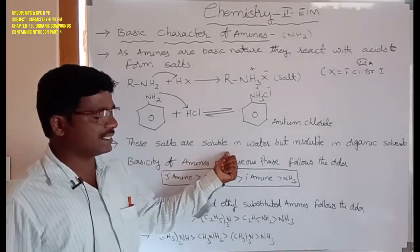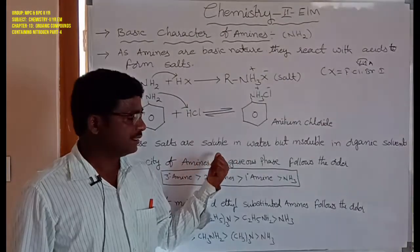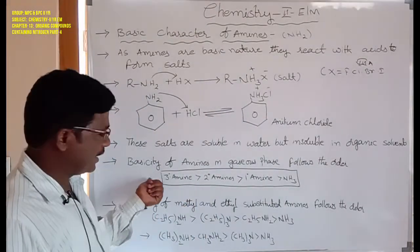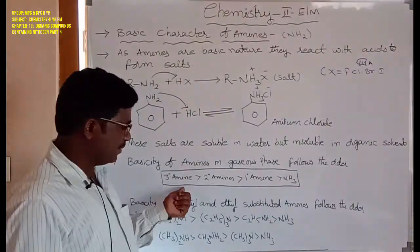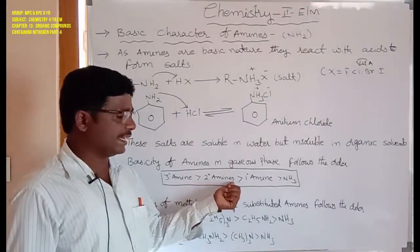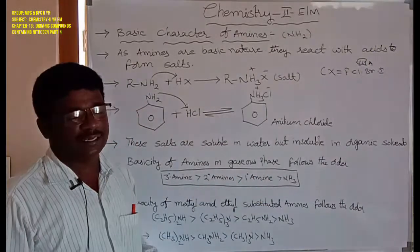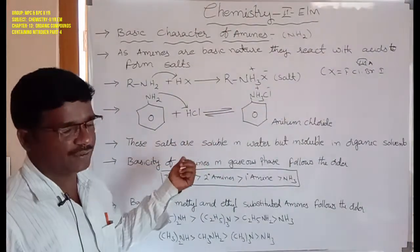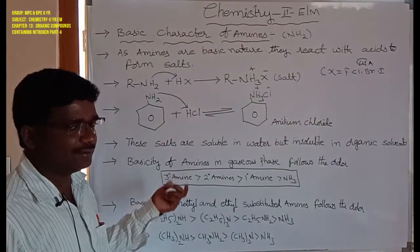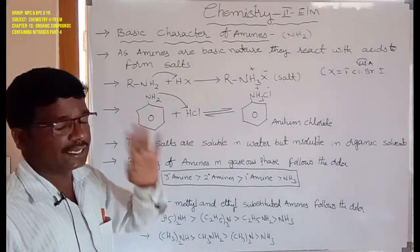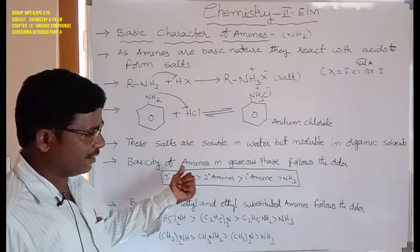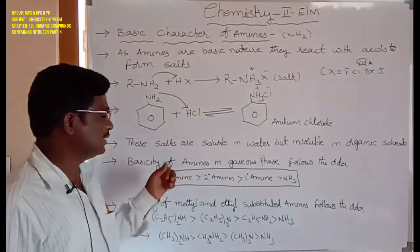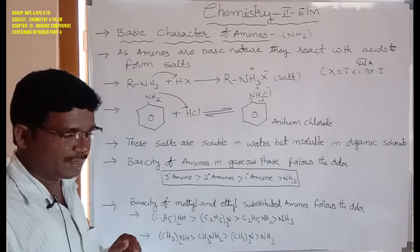The basicity of amines in the gaseous phase follows this order: tertiary amines is greater than secondary amines, secondary amines is greater than primary amines, and primary amines is greater than ammonia (NH3). This order is known as the basicity of amines in the gaseous phase.